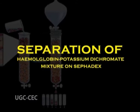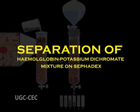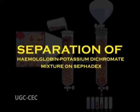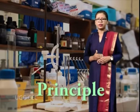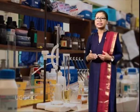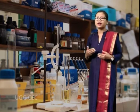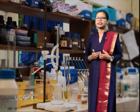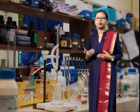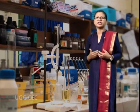Now let us come to separation of hemoglobin-potassium dichromate mixture on Sephadex. First, let us discuss the principle. Gel filtration is performed using porous beads as the chromatographic support. A column constructed from such beads will have two measurable liquid volumes: the external volume consisting of the liquid between the beads, and the internal volume consisting of the liquid within the pores of the beads. Large molecules will equilibrate only with the external volume, while small molecules will equilibrate with both the external and internal volumes.